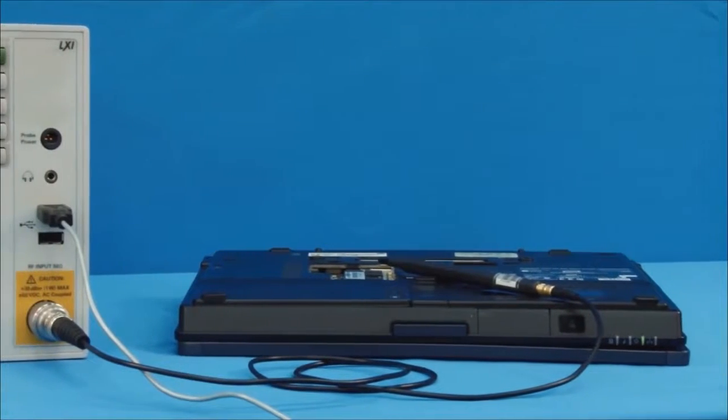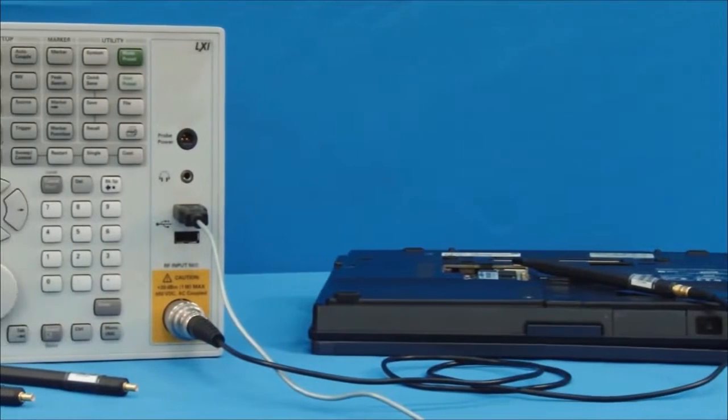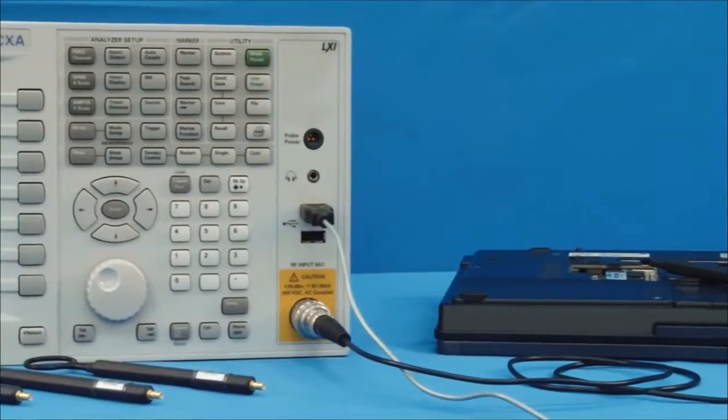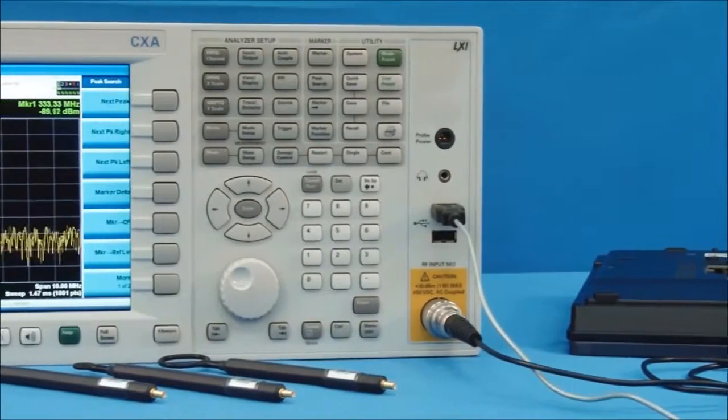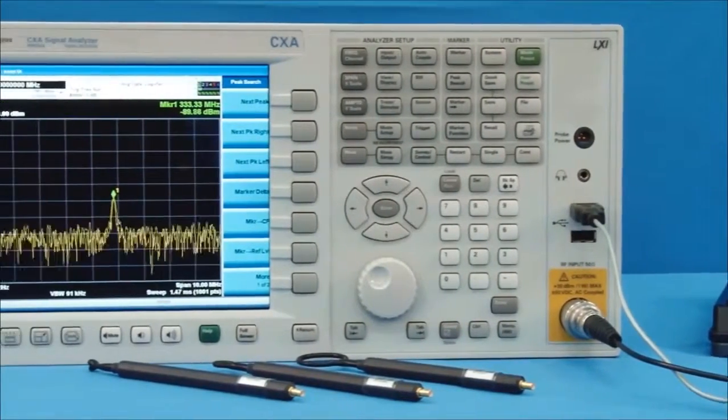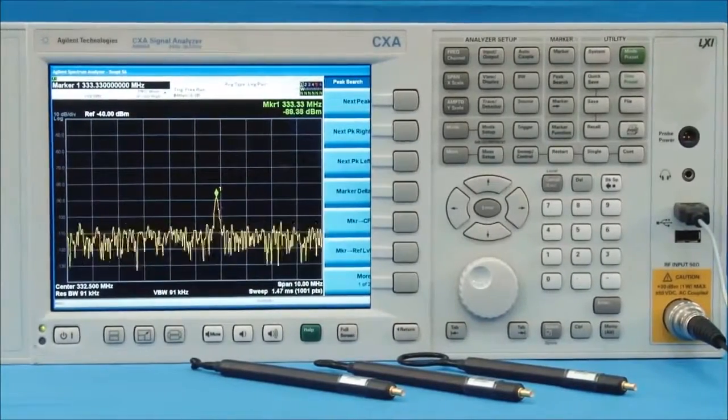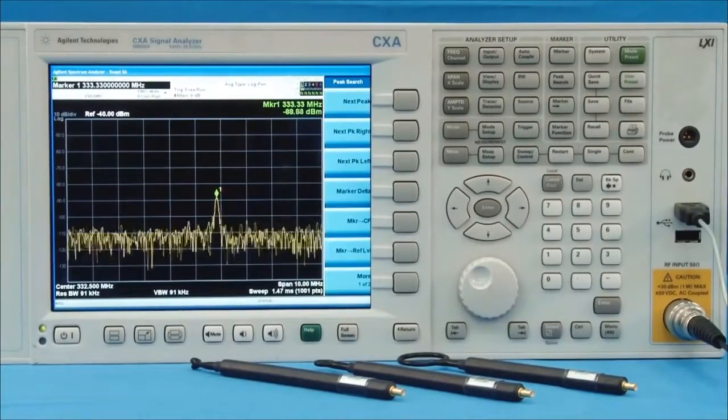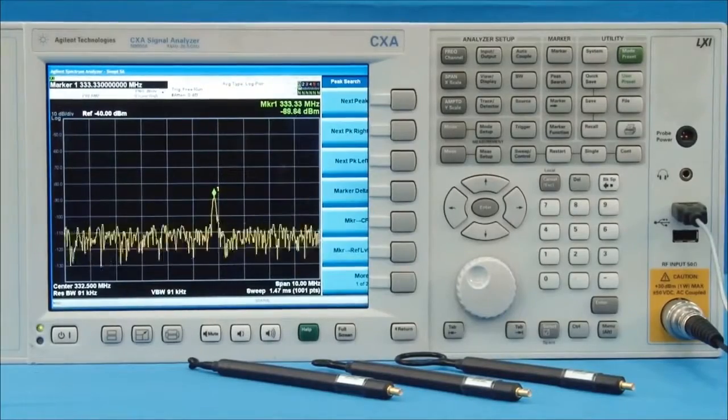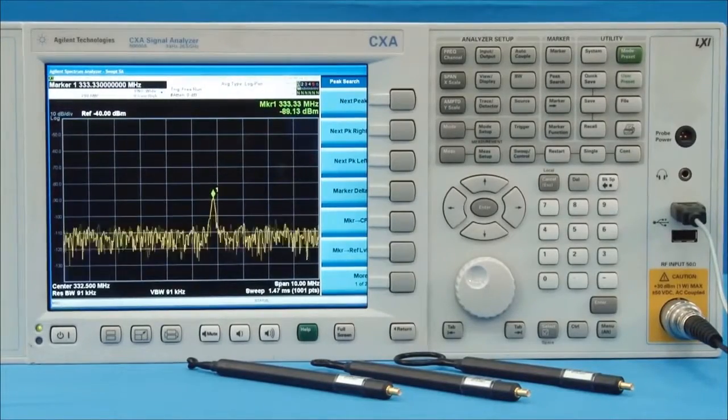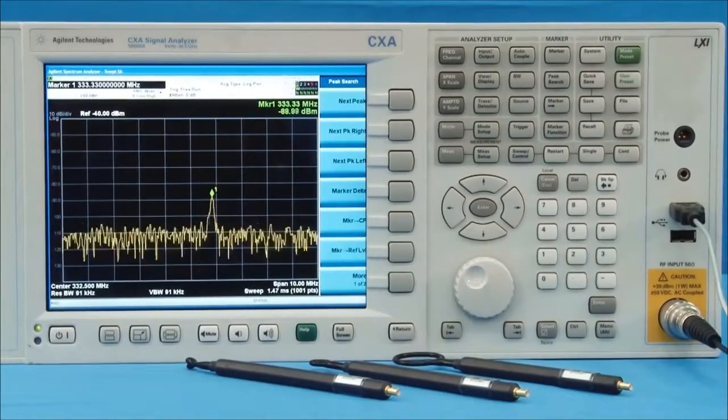To summarize for this demonstration, we've used the N9000A CXA with EMI measurement application and probe set. This configuration is the most cost-effective X-Series signal analyzer solution for performing pre-compliance conducted and radiated emissions testing for both commercial and mill standard requirements.